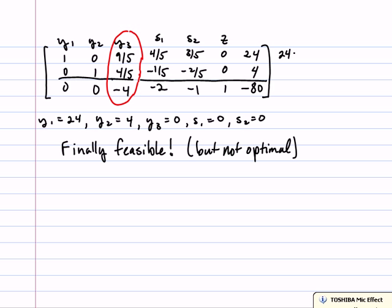It's 24 divided by 9 fifths, which is the same thing as 24 times 5 ninths. And then likewise, 4 divided by 4 fifths, which is 4 times 5 fourths. 4 times 5 fourths gives us 5, and 24 times 5 ninths is 40 thirds, which is 13 and 1 third.